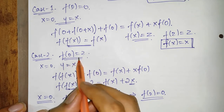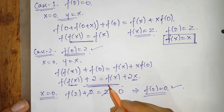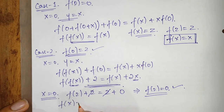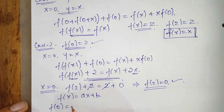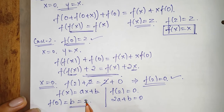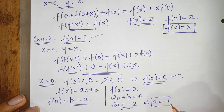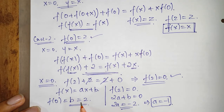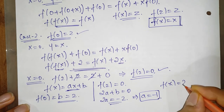We used f(0) = 2 and found f(2) = 0. Since f(x) is linear, let f(x) = ax + b. Then f(0) = b = 2. And f(2) = 2a + b = 0, so 2a + 2 = 0, giving a = -1. Substituting back, we get f(x) = 2 - x.